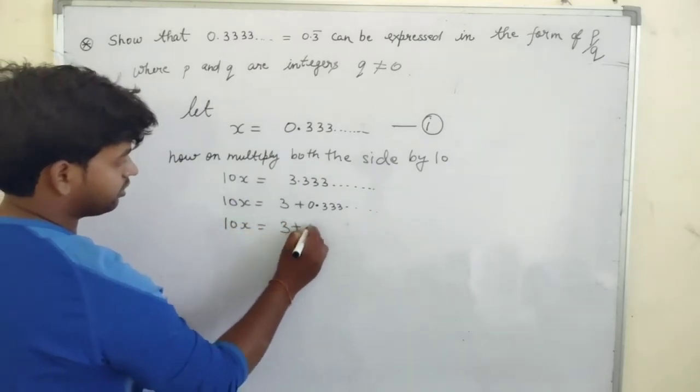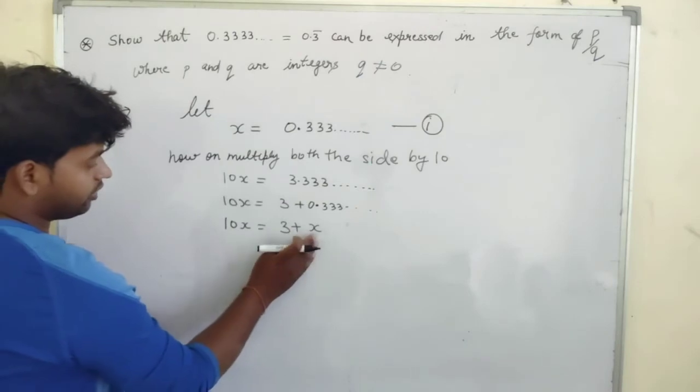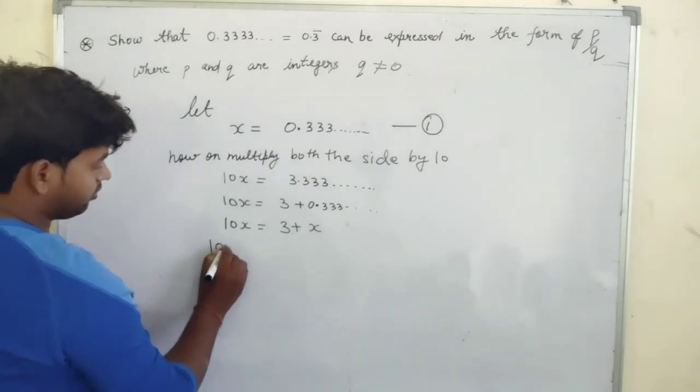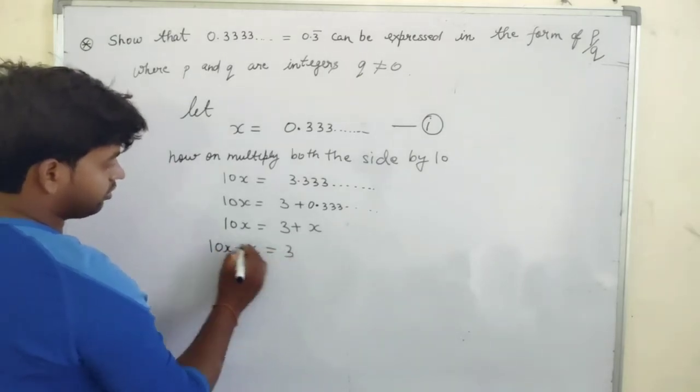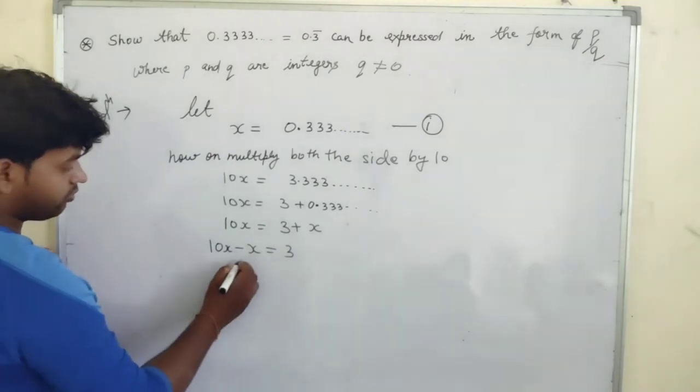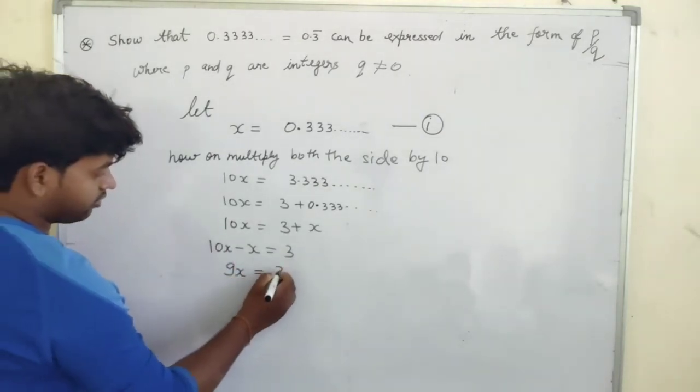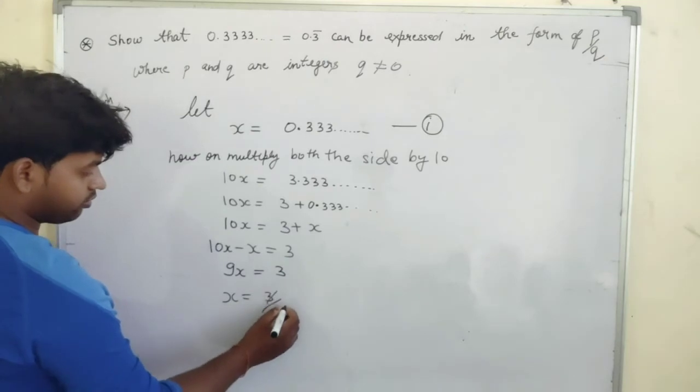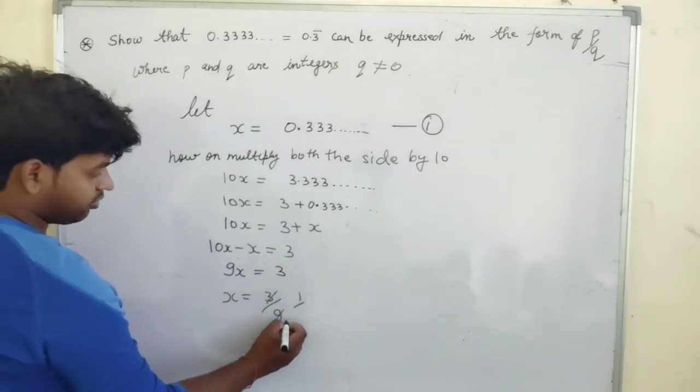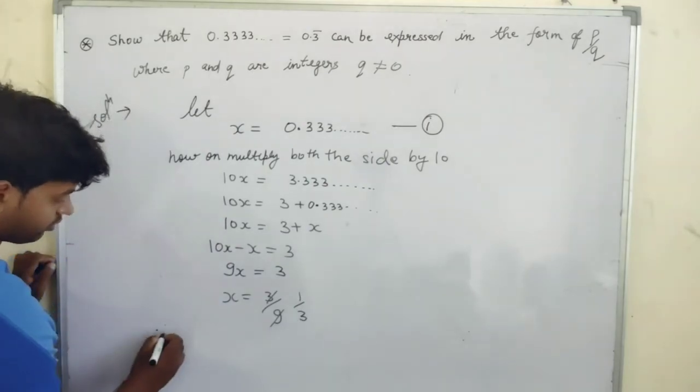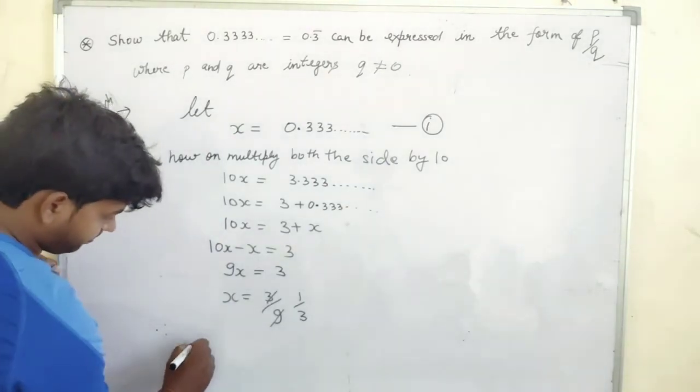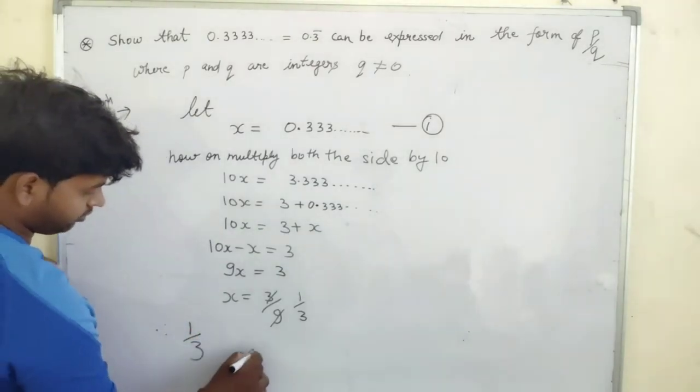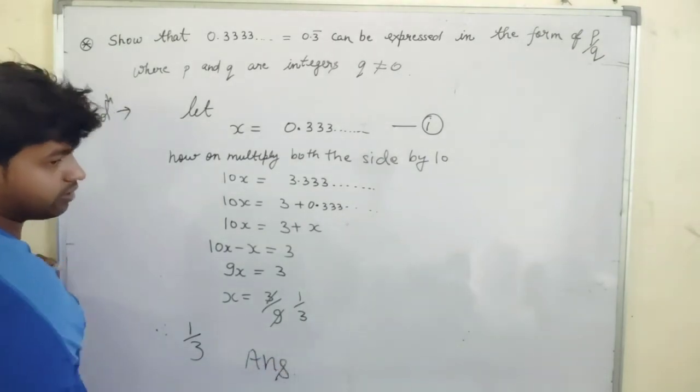If you take this number on this side, 10x minus x equals 3. This becomes 9x equals 3, and x equals 3 by 9. On simplifying we get 1 upon 3. Therefore, the number will be 1 upon 3. That is our answer.